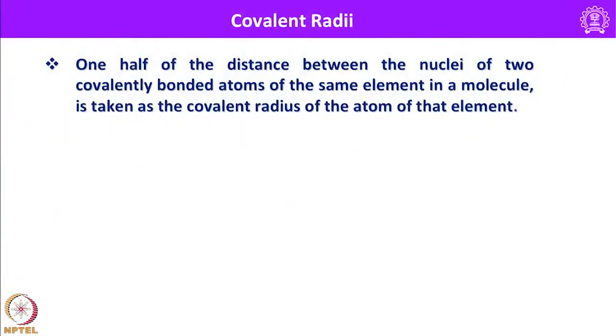Our interest is focused towards the main group halides, so let us not worry too much about transition metal chemistry. Let us look into some important periodic properties and entities we come across while discussing the classification and periodic trends. The important term we come across is covalent radii. The covalent radius is one half of the distance between the nuclei of two covalently bonded atoms of the same element in a molecule.